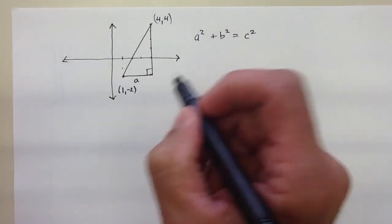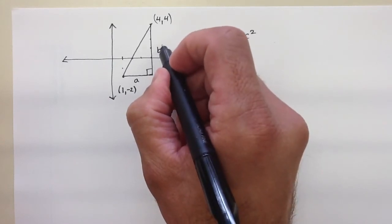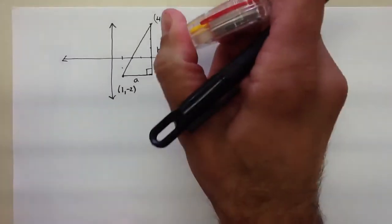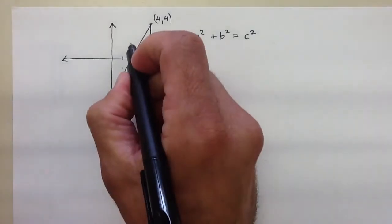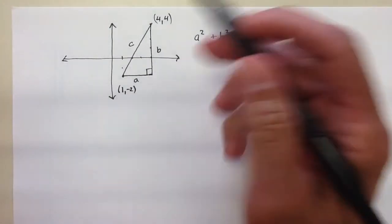And if you can make it a right triangle, remember you can use the Pythagorean Theorem, which is a squared plus b squared is equal to c squared. In other words, this side squared plus this side squared would be equal to that side squared, which is really the hypotenuse.